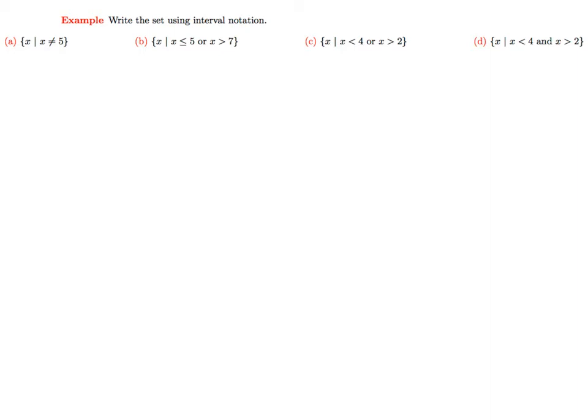Starting with question A, let's write this out graphically. If I were to graph this here, we have 5, and we are excluding 5, and including all values that are strictly less than 5 and all values that are strictly bigger than 5.